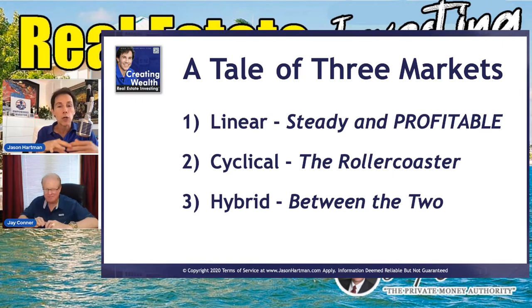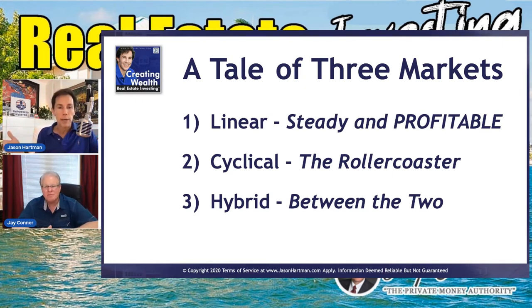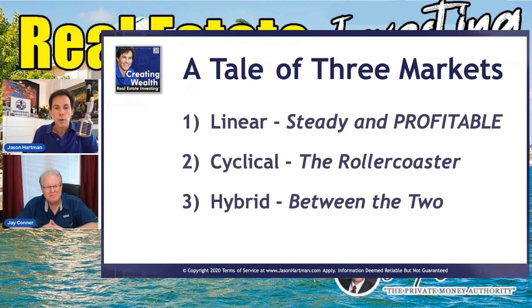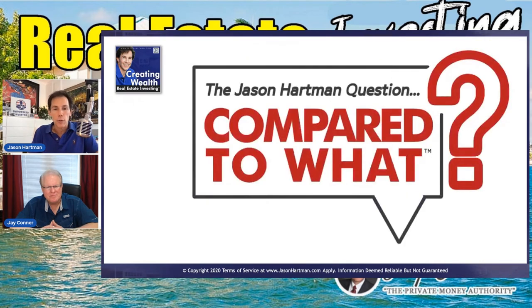There's an old saying in the news media: if it bleeds, it leads. The media loves sensationalism, so they tend to ignore all of these great linear markets. The third type is the hybrid market — as the name implies, it's in between the two. So those are the three types of markets.